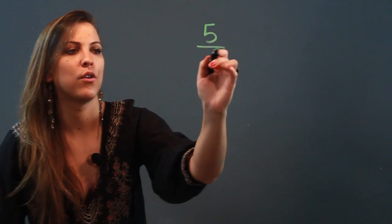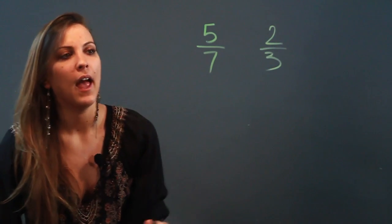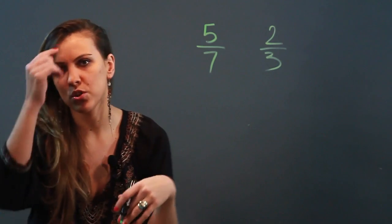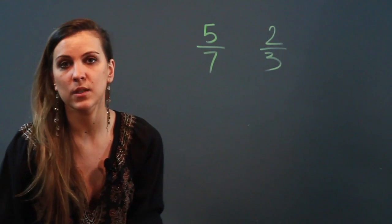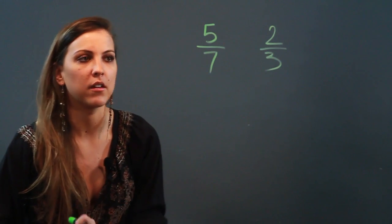So if the two quantities you are given are 5 over 7 and 2 over 3, and you want to know whether or not there's a proportional relationship, well the easiest way to find out is to simply cross multiply and then compare products.